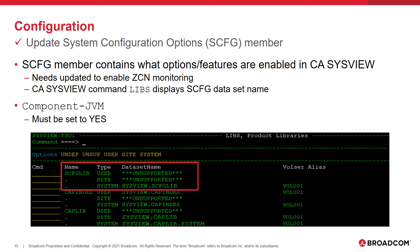The first step in configuring ZOS Connect monitoring is ensuring that the correct options and features are enabled in SysView. In order to enable and disable options and features, you modify the system configuration options member. You can use the SysView command LIBS to display the dataset name where the system configuration options member lives. In this member, you must code componentJVM to YES in order to enable CTG monitoring.